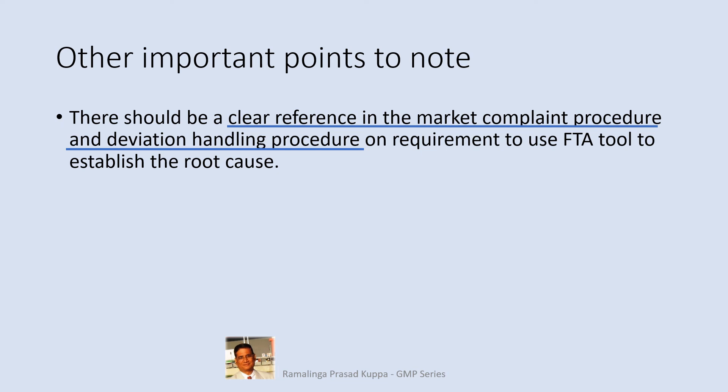QRM tools guideline ICH Q9 prescribes that FTA can be used to investigate complaints or deviations in order to fully understand their root cause and to ensure that intended improvements will fully resolve the issue and not lead to other issues — that is, solve one problem yet cause a different problem. It is important that the SOP dealing with market complaints and deviation handling should have a reference to the FTA tool. If it is not part of your SOP, revise accordingly.